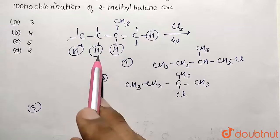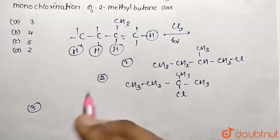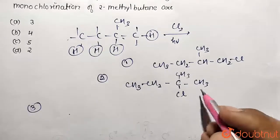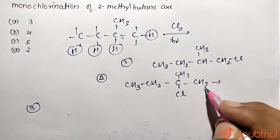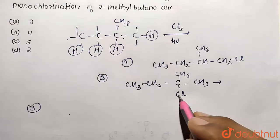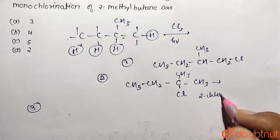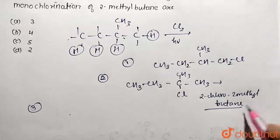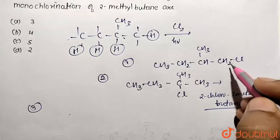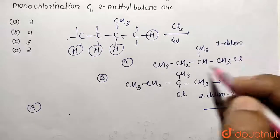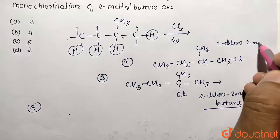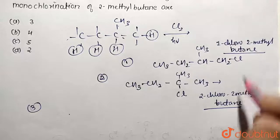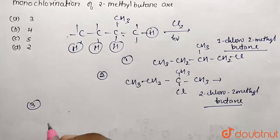Now we need to write the third product, formed by removing a hydrogen from the tertiary carbon and substituting chlorine there. To avoid confusion, let's name the products: the third one is 2-chloro-2-methylbutane. The first product is 1-chloro-2-methylbutane, and the second product is also named using the 2-methylbutane backbone.